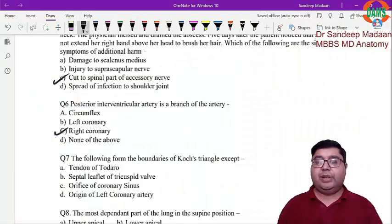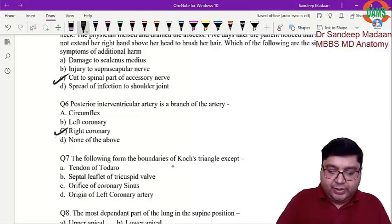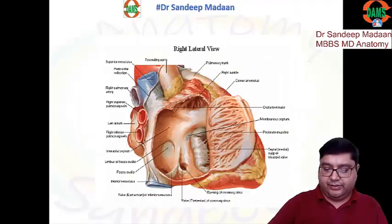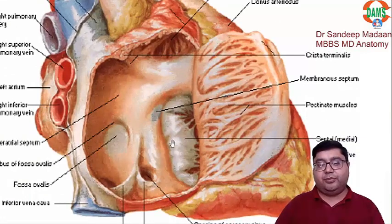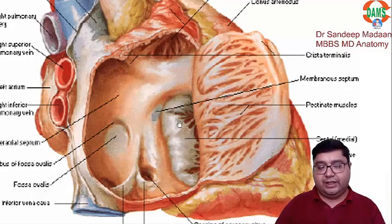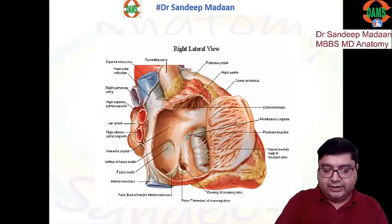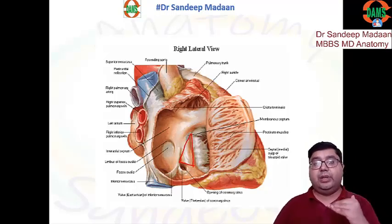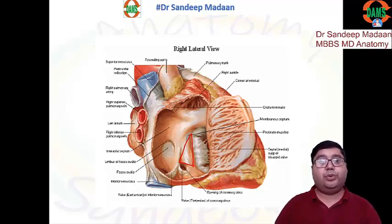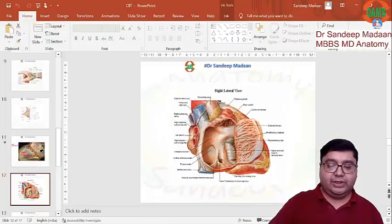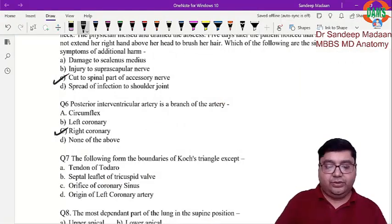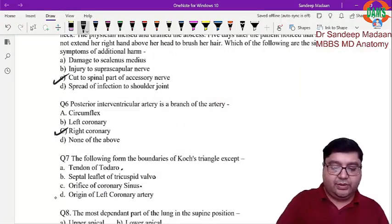Next question: boundaries of Koch's triangle. In the right atrium, between the atrium and ventricle is the AV valve. The septal leaflet of the AV valve is one boundary, the orifice of the coronary sinus is another, and the tendon of Todaro — a sub-endocardial ridge — is the third boundary. Koch's triangle is important because it is where the AV node is located.